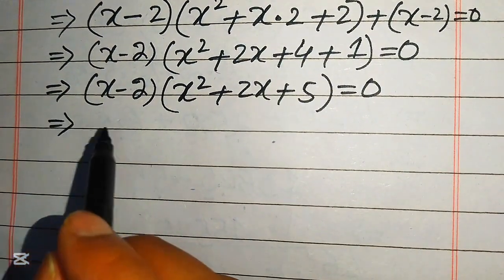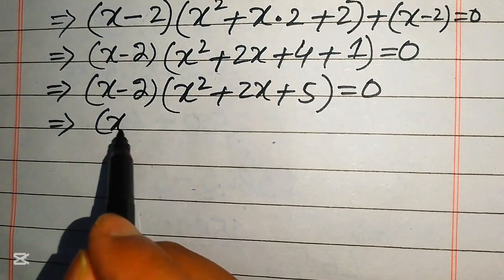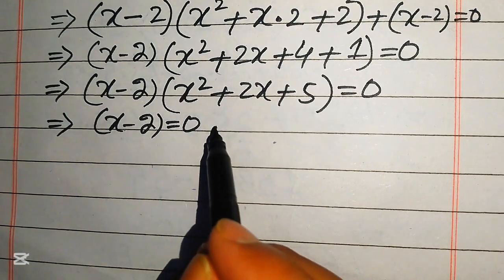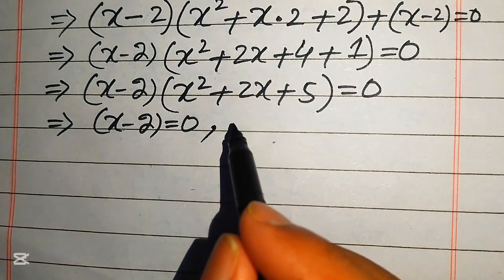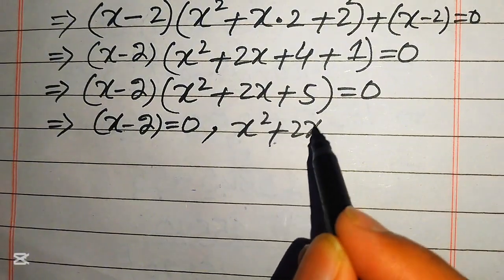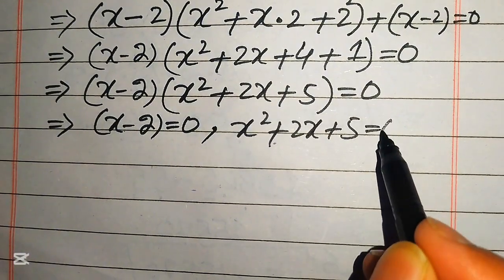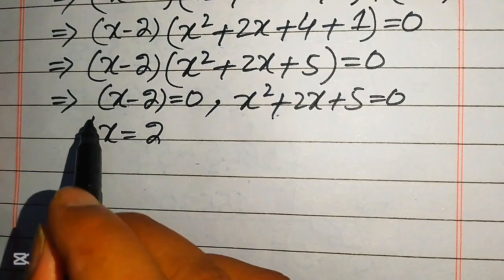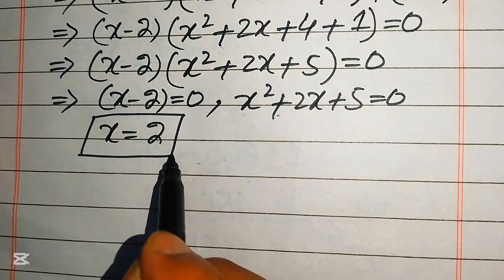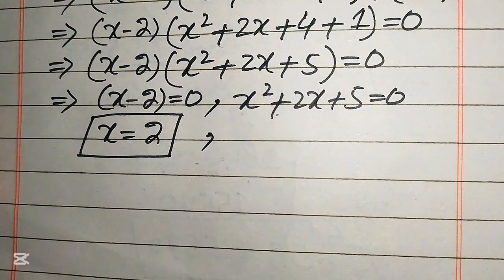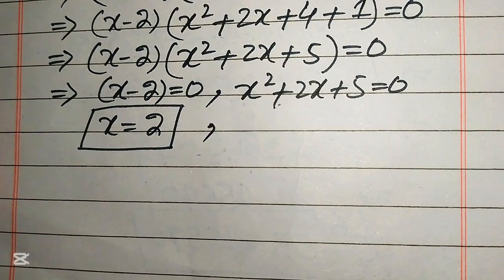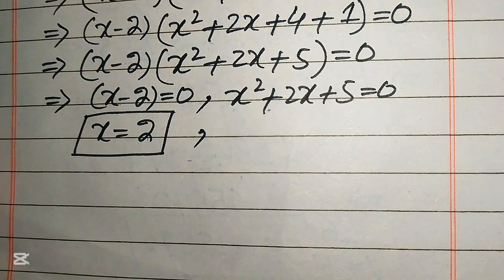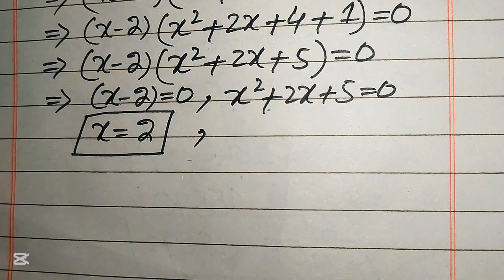Now we divide this into two cases. The first case is x minus 2 equals 0. The second case is x squared plus 2x plus 5 equals 0. From the first case we easily get x equals 2. From the second case we need to find the values of x — it is a quadratic equation and we need to find its roots using the quadratic formula.